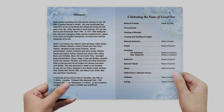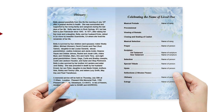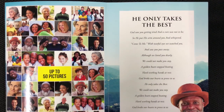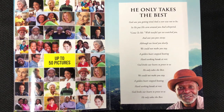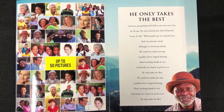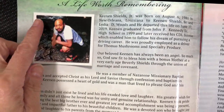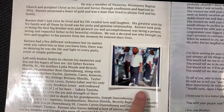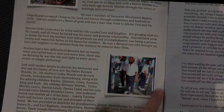The inside left page of a funeral program. Typically on the inside left of a bifold program you will have a life biography or obituary. If you do not have one, you can place a special poem, a scripture, or additional photos here in its place. If your obituary is shorter, you can add an additional photo here and wrap your text around it to fill the page.